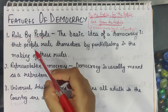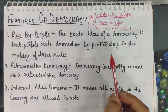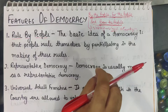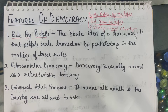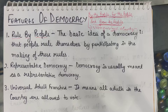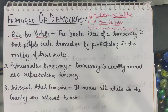The basic idea of a democracy is that people rule themselves by participating in the making of these rules. How do people participate in making the rules? We participate by choosing our candidates — we give them the vote, and according to our vote the government is formed. No one from other countries comes to make our government. So democracies are ruled by the people only; we are the ones making the rules.